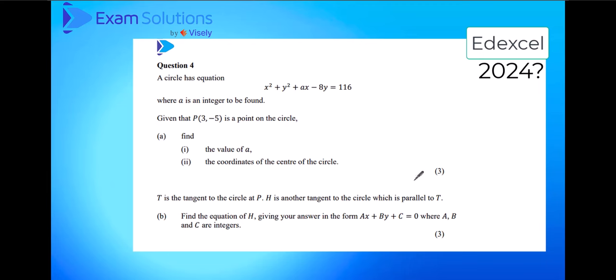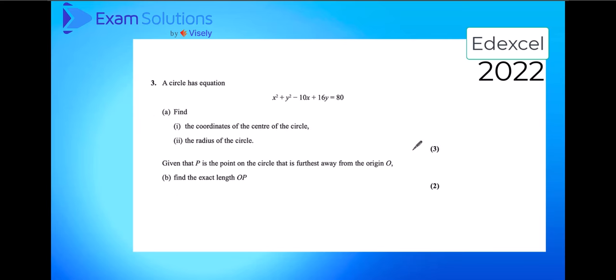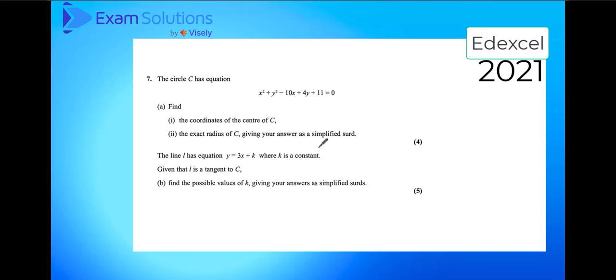In terms of mark distribution, 3 is quite typically given for this type of question. Normally one for the centre and this question involving the unknown usually uses up the two marks. If you look historically, 2023 three marks, 2022 three marks. In 2021 there was four marks, however this is due to the case of the simplified surd, so that would be the extra step in your calculation which would get you an extra mark that year.